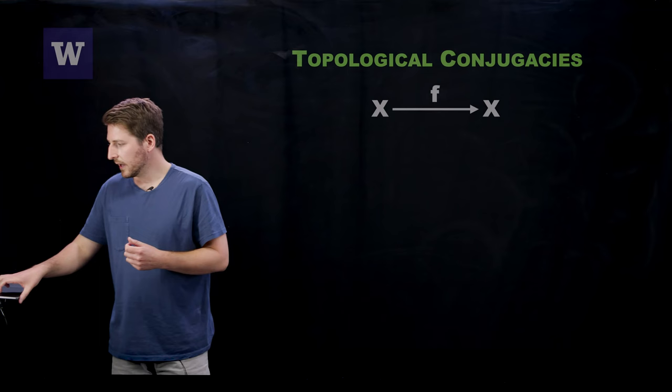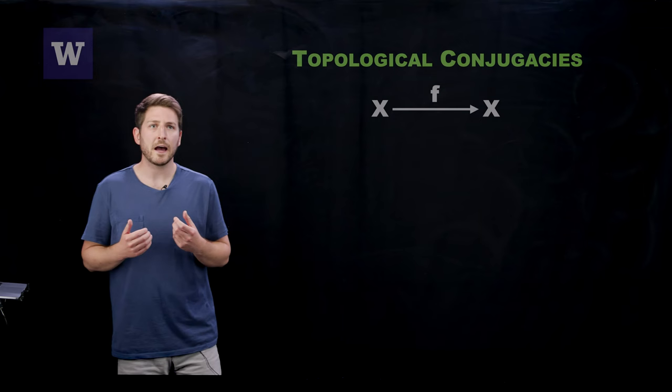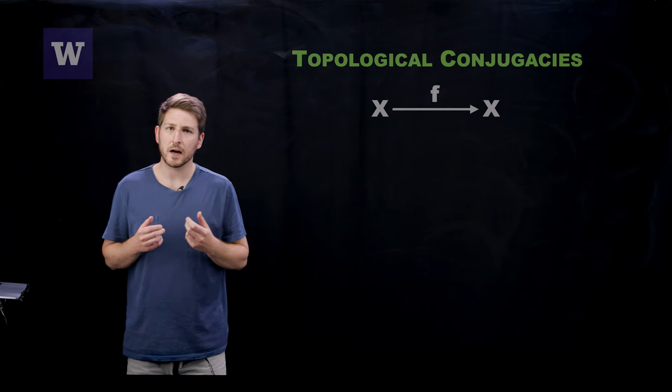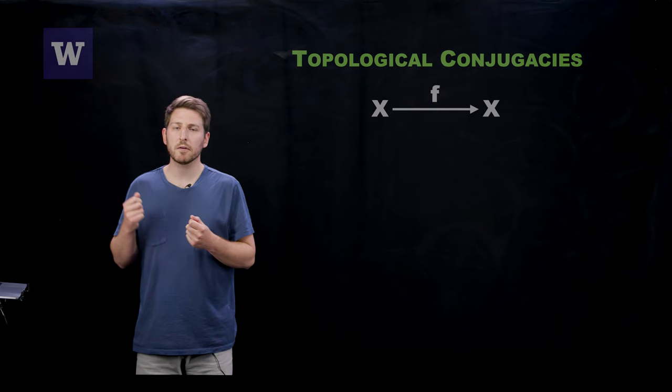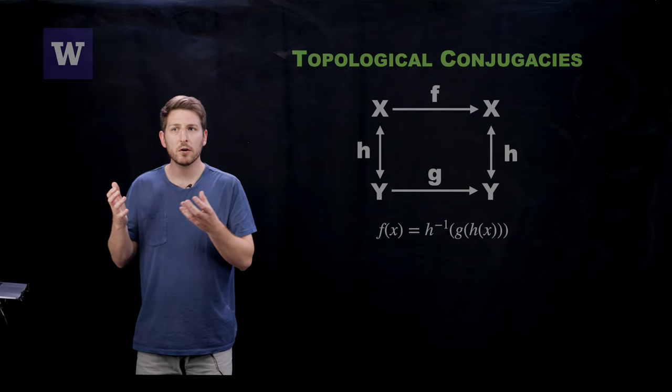The theoretical background that all of this is going to lie upon is that of topological conjugacies. Now, this is an old idea from dynamical systems theory, which allows you to relate two iteration schemes, say f and another function g, which might be posed on completely different spaces.